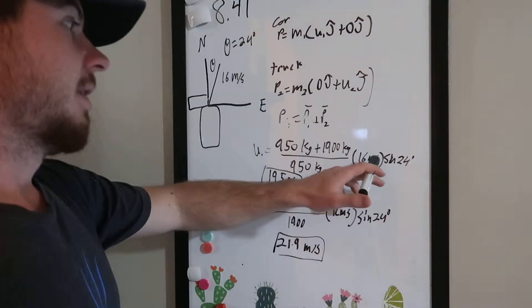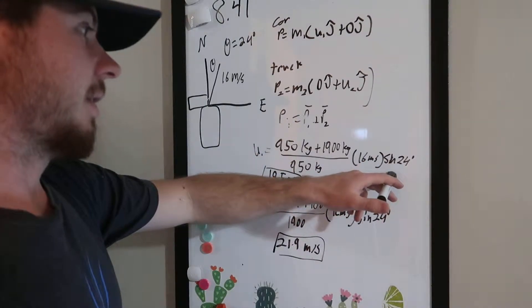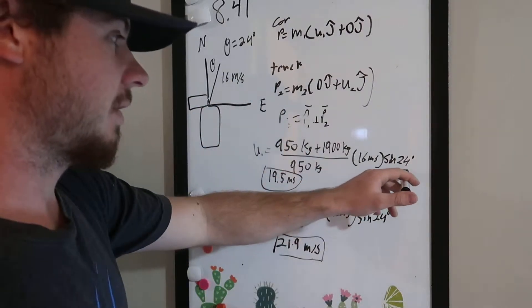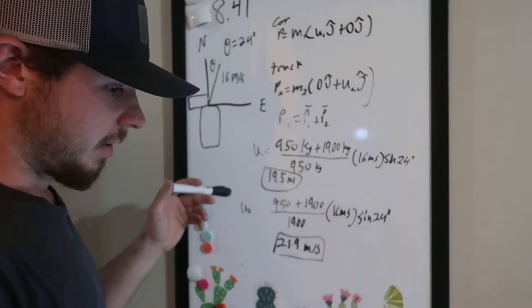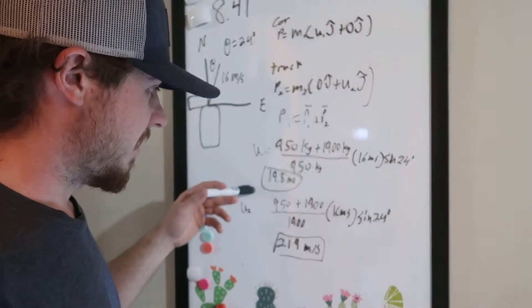Multiply it by the speed, 16 meters a second, and the sine of the angle that they're pushed off to, sine of theta is 24 degrees. We're going to get the velocity of the car before the collision, which is 19.5 meters a second.